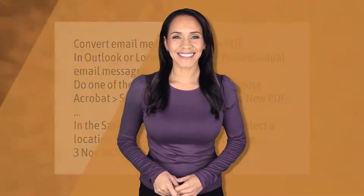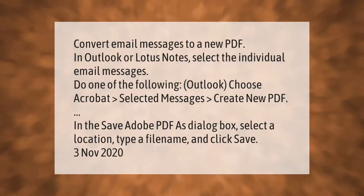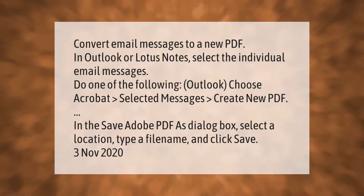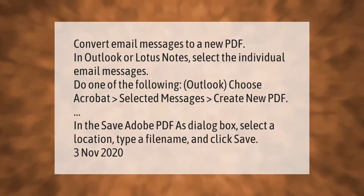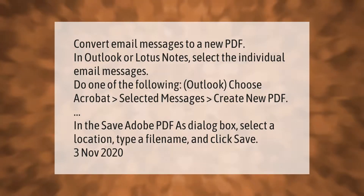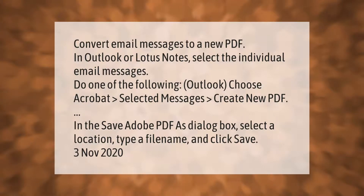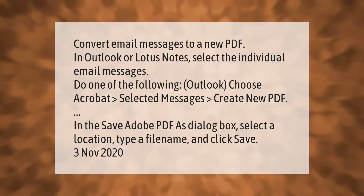To convert email messages to a new PDF in Outlook or Lotus Notes, select the individual email messages. In Outlook, choose Acrobat, then Selected Messages, then Create New PDF. In the Save Adobe PDF As dialog box, select a location, type a file name, and click Save.